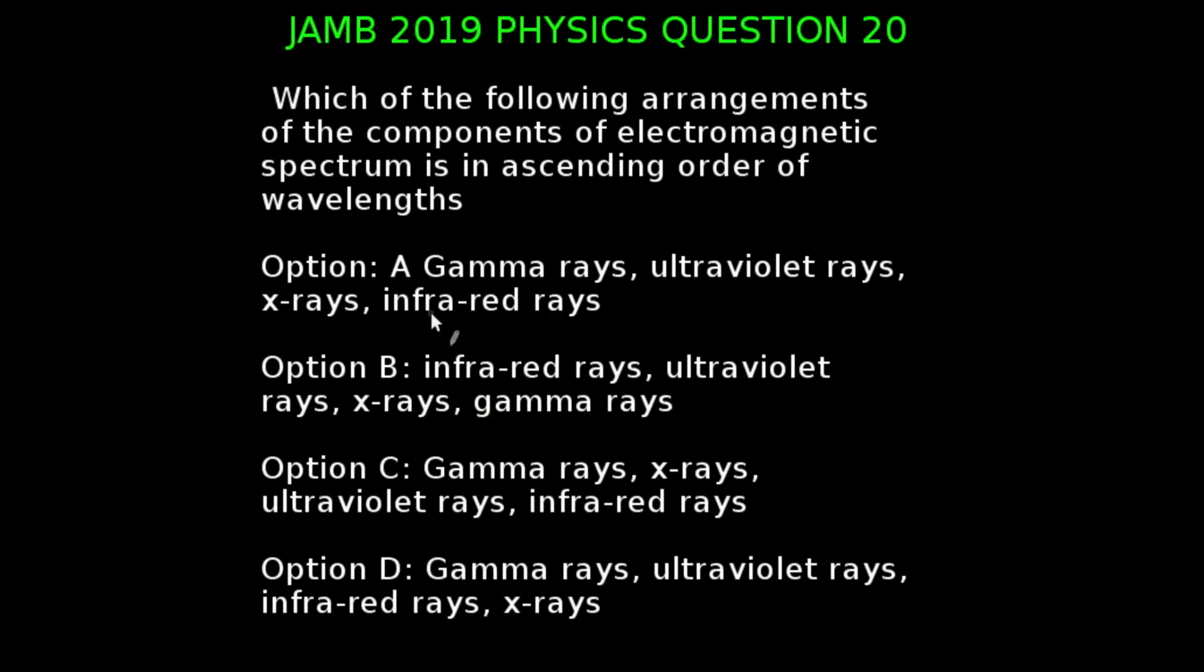You're looking at question 20 of the JAMB 2019 physics examination. Which of the following arrangements of the components of electromagnetic spectrum is in ascending order of wavelength? Electromagnetic radiation is classified into types according to the frequency of the wave. And in order of increasing frequency,